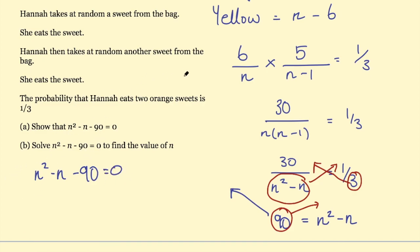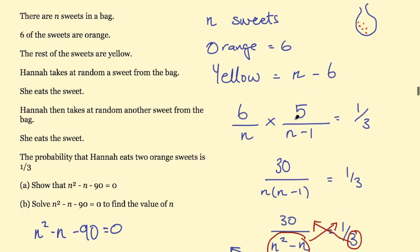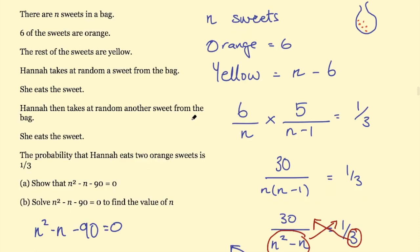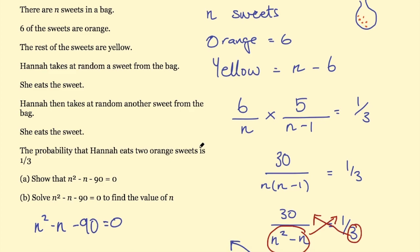What I've shown is that taking the probabilities of picking two orange sweets and setting that equal to one third gives an equation which, after simplifying, comes out to n squared minus n minus 90 equals zero. My process was to take all the information in the question and write it in a way that makes more sense to me — interpreting it in my own way, which is my method of problem solving.